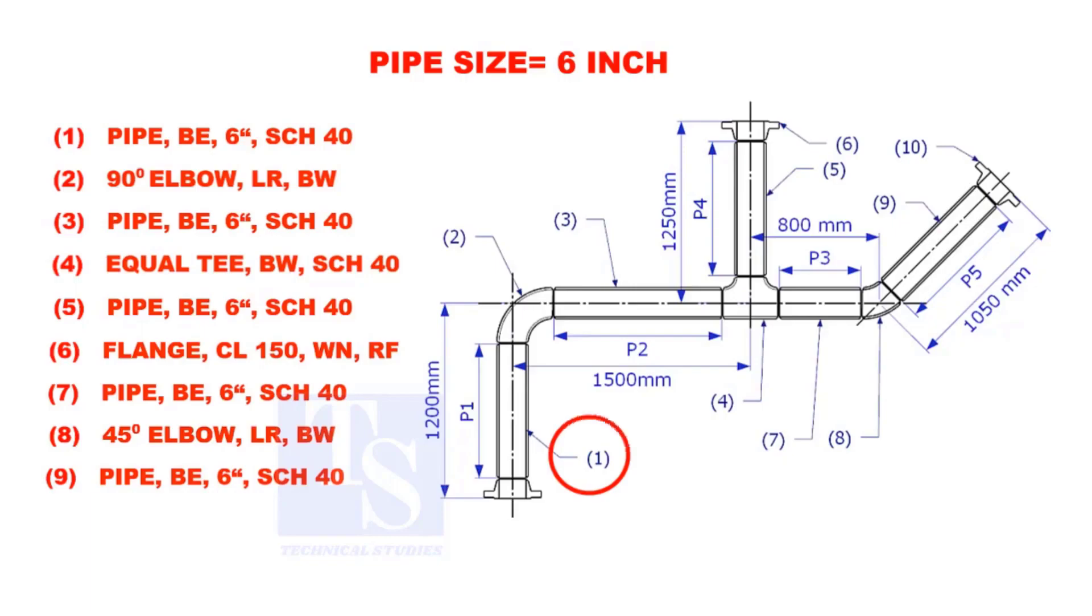Let us calculate the length of pipe 1. To calculate the length of pipe 1, we need to reduce the flange height and the elbow center from the measurement 1200mm.